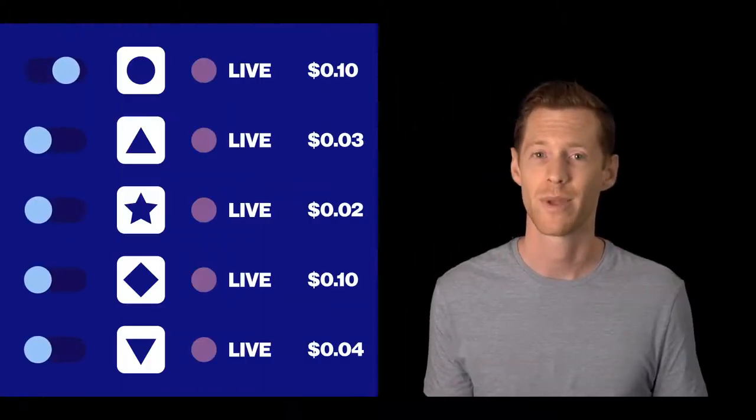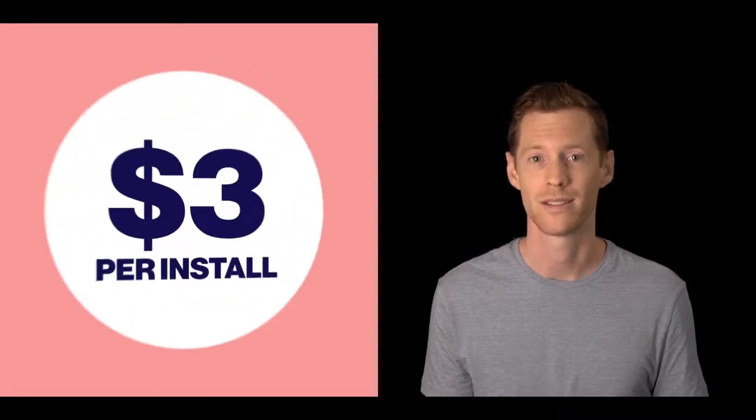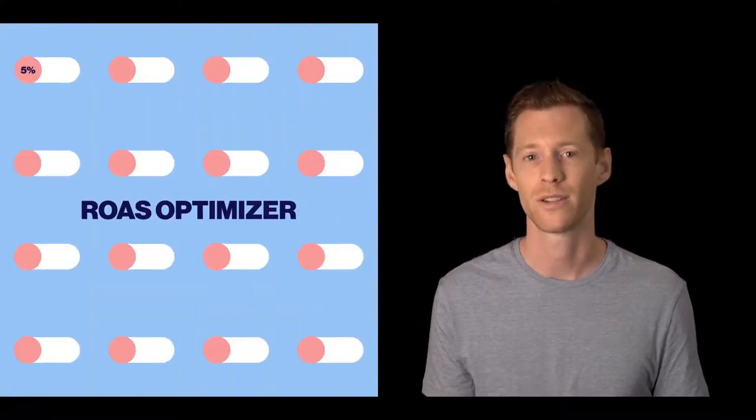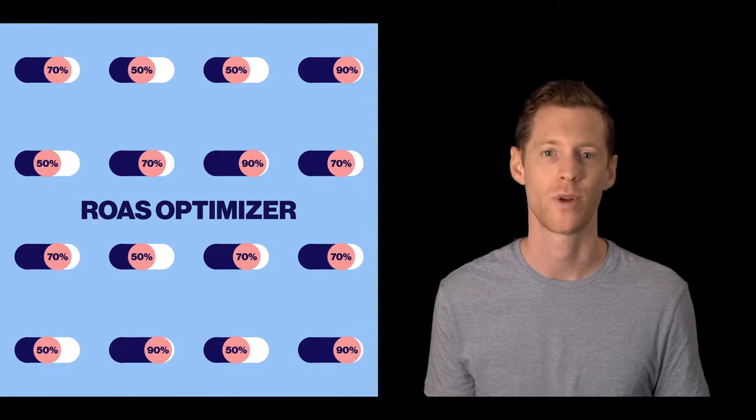That means you can set up campaigns in the UA platform, bid on a CPI basis, and even use the Ross Optimizer to optimize your cross-promotion strategy.